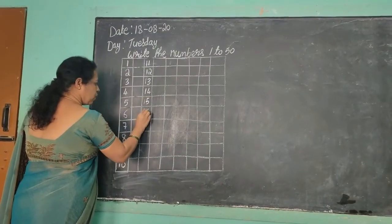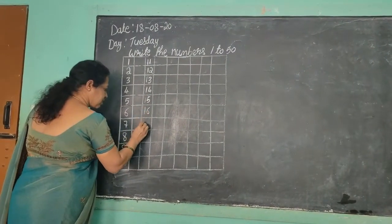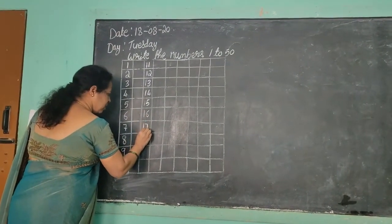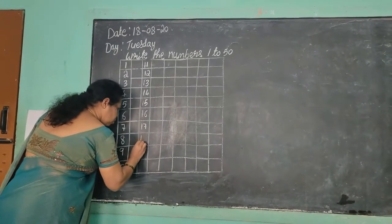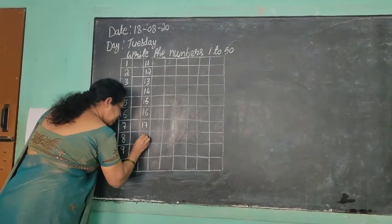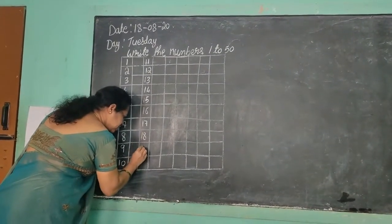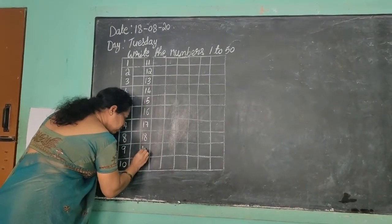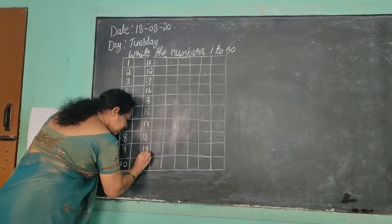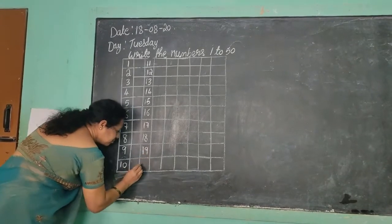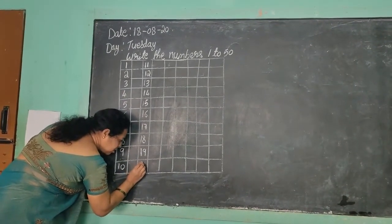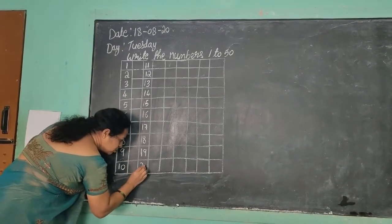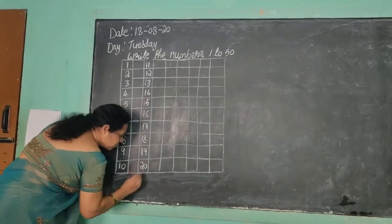1, 6 — 16. 1, 7 — 17. 1, 8 — 18. 1, 9 — 19. 20. How will you write? 2, 0 — 20.